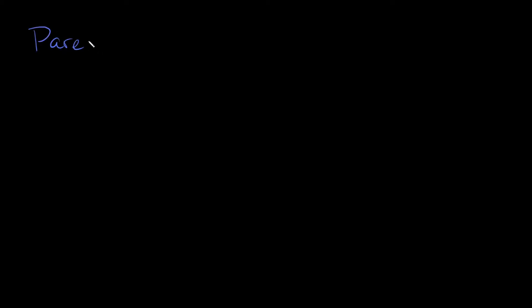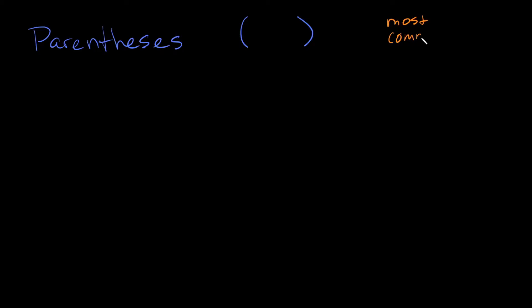First of all, parentheses. What are parentheses? So maybe you've seen these symbols before. They're these rounded symbols, and all these are used for are to group parts of a math equation together — the parentheses, brackets, and braces. They're all used to group parts of a math equation together. Parentheses are the most common; you will see these on most of your problems. They're the most widely used.